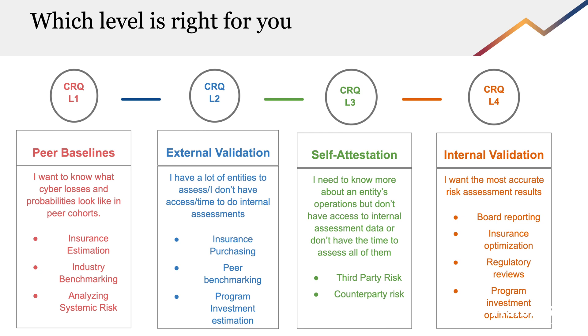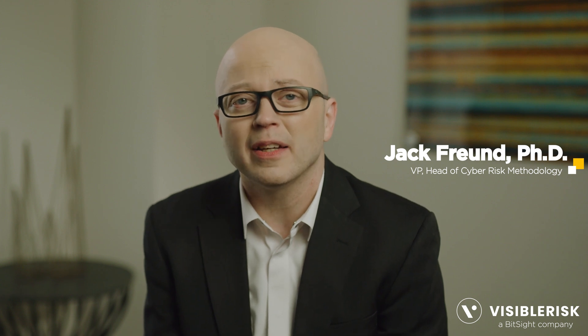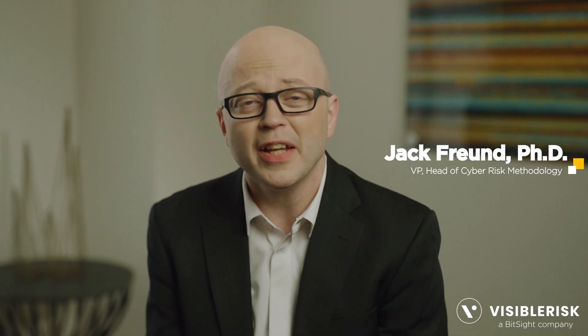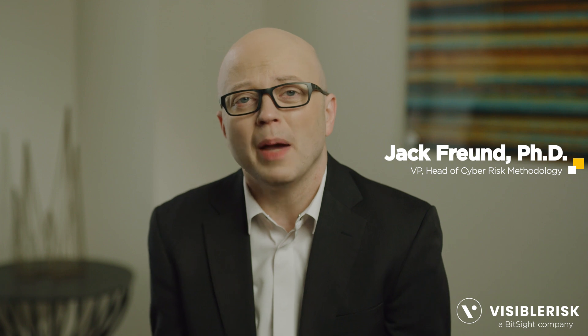Determining which CRQ level is right for you can be facilitated by better understanding the use case you're trying to address. CRQ level one is excellent for looking at systemic risk across an entire industry segment. This is good for insurance companies estimating losses if they're oversubscribed to potential losses in a certain sector or undersubscribed in areas with opportunity for business growth. It's also helpful for organizations looking to benchmark their loss and control states against their peers, establishing parameters that form a baseline for the other CRQ levels.